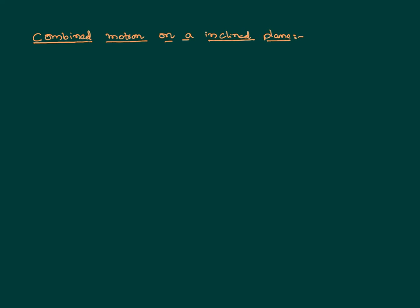Hello everyone. In this video we would like to discuss the combined motion of a body when it is on an inclined plane. In the previous post we discussed how it is if the body is having combined motion — both translatory and rotatory motion — on a horizontal surface. Now I want to discuss about when the body is on an inclined surface.